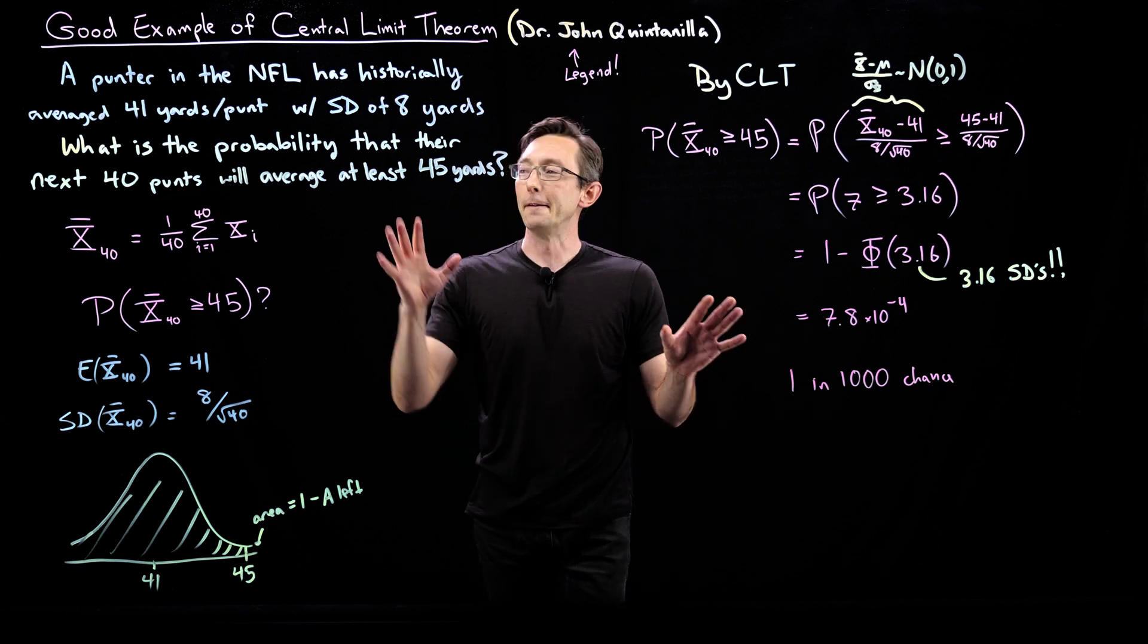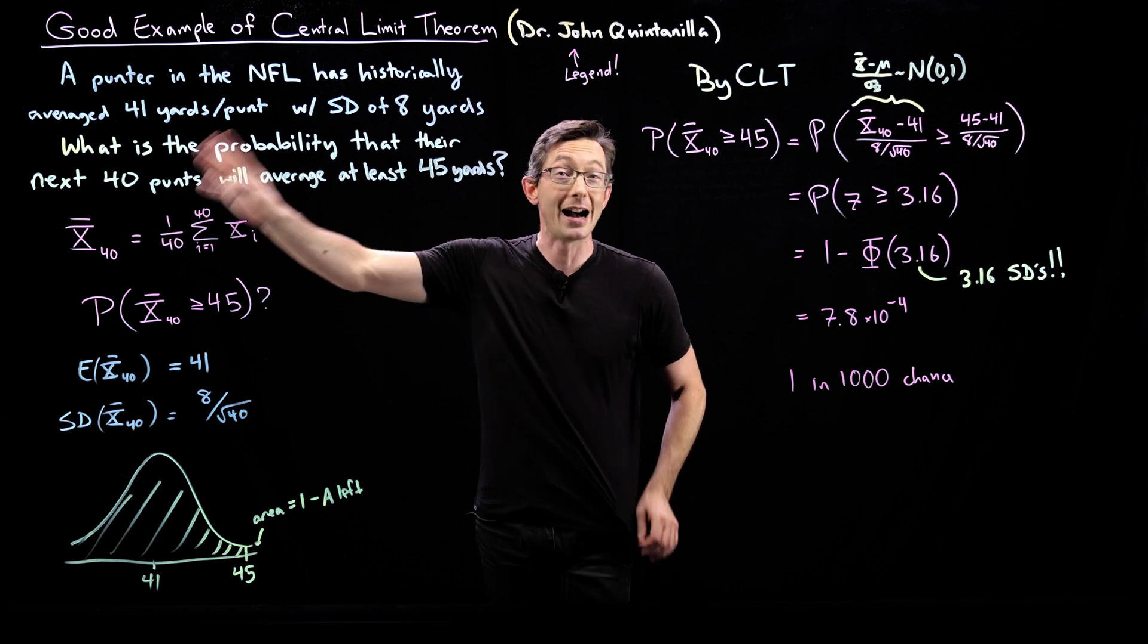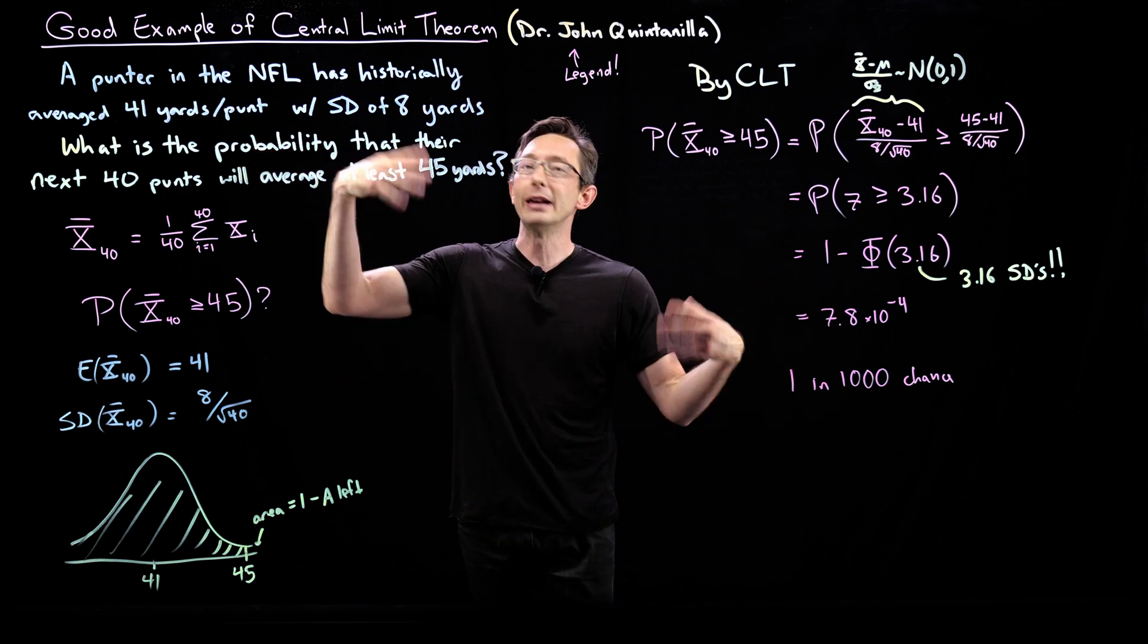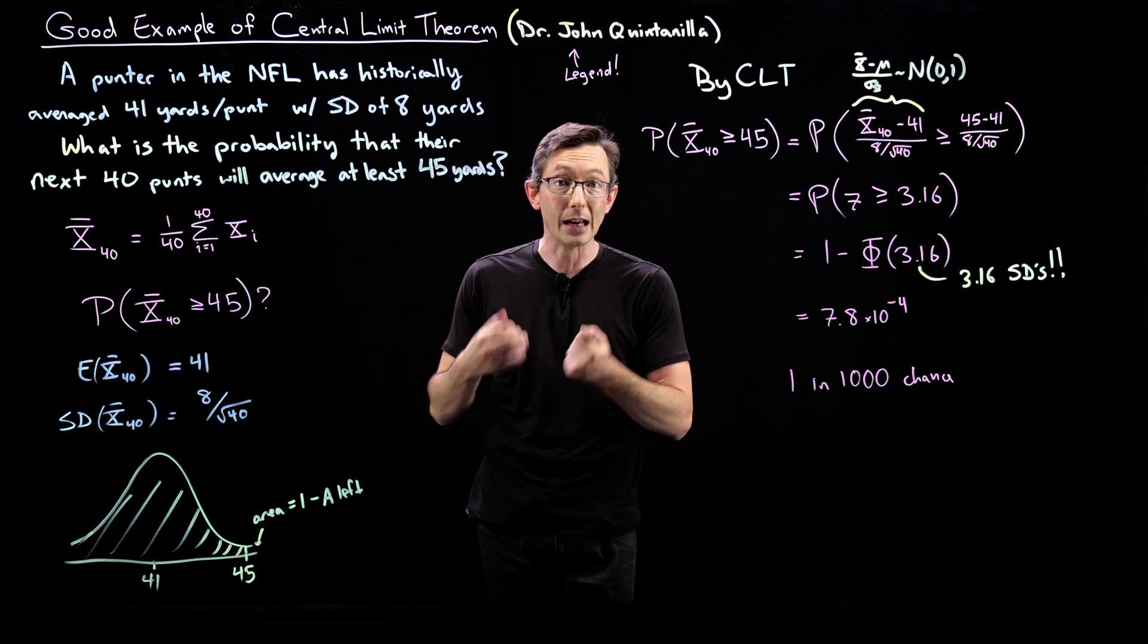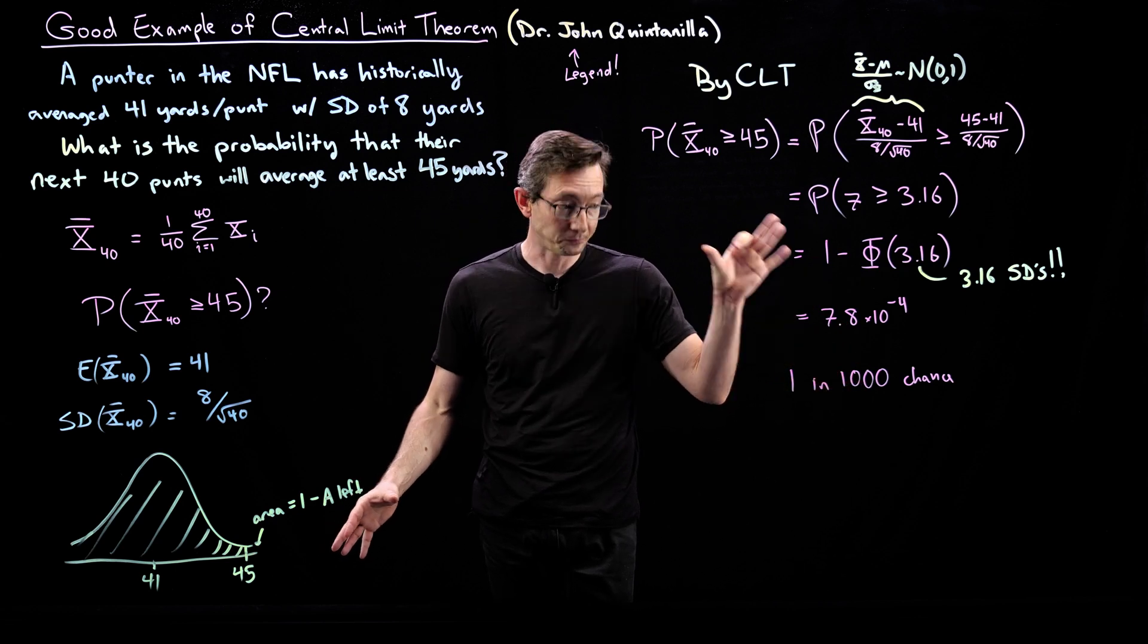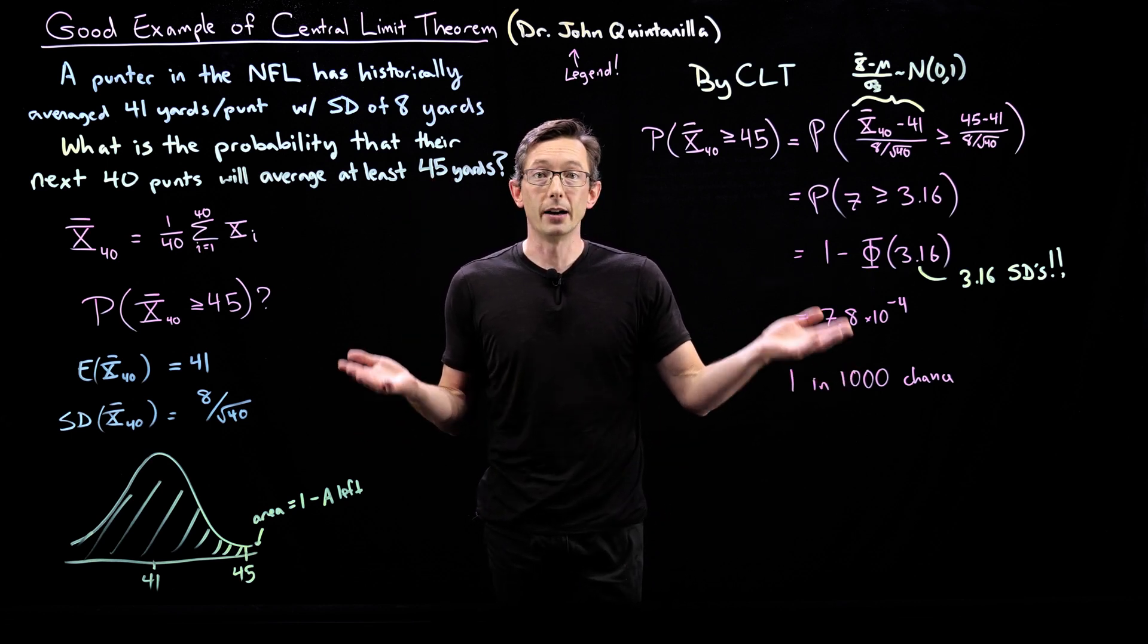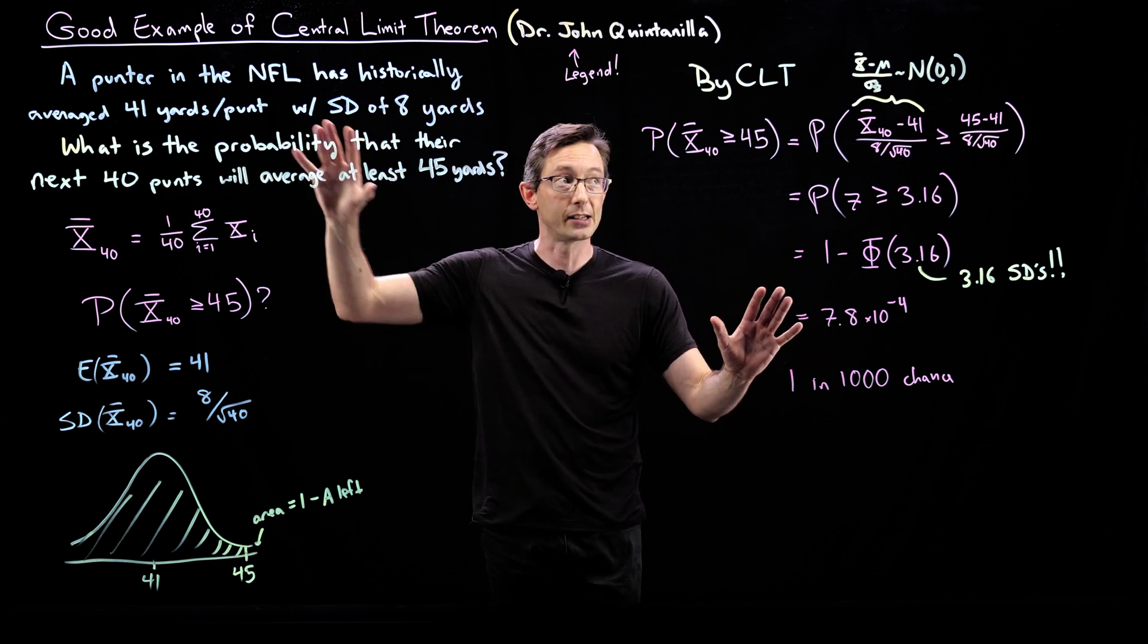Now, this is kind of a cute example. Obviously people can change, weather can change, you can get injuries. These are not independent events, and this is not a fixed distribution. This is probably a wandering distribution. But if you assume independence of the kicks, if you assume that there's just kick after kick kick after kick are all distributed from the same distribution, then there's less than a 1 in 1,000 chance that the kicker can increase their punt average to 45 yards. I think that's really cool.